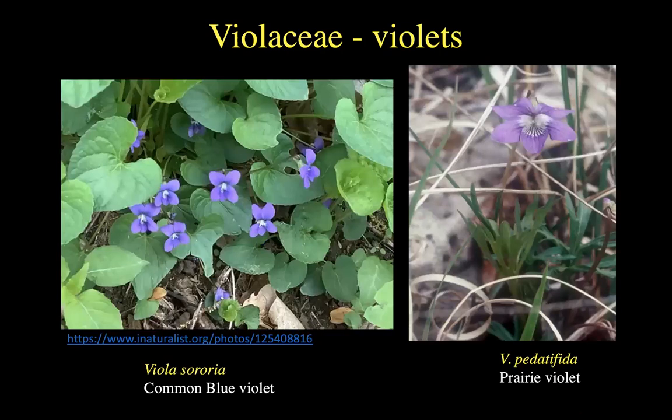Here are a couple of our local violets: Viola sororia, very common in understory conditions throughout North America, and Viola pedata fida, which is an endemic prairie viola with a very different kind of leaf.